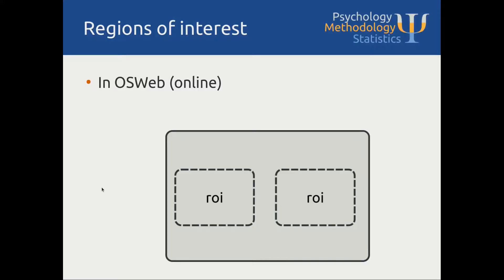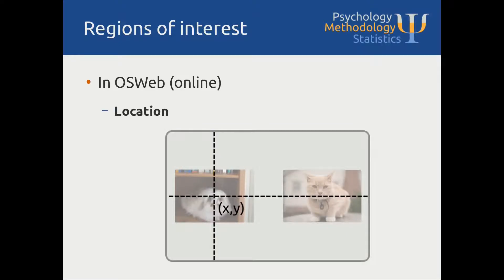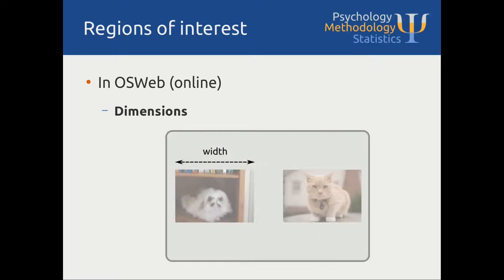In the OSWeb extension of OpenSesame we cannot use the graphical user interface for regions of interest, so instead we are going to manually determine whether a participant clicked within a region of interest or outside of it. To do that we need the following information about the regions of interest: first, the exact X and Y position of our stimuli — by default images are centered around those coordinates — and second, the dimensions of the stimuli, meaning their width and height, for both the target and the distractor.